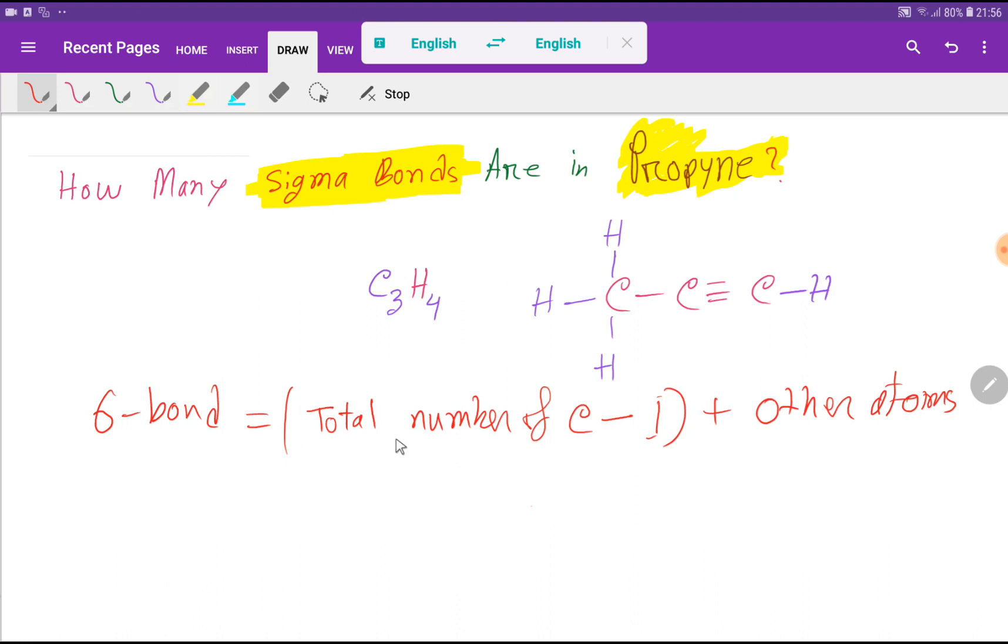Look at here: total number of carbon minus 1 plus other atoms. So for this molecular formula we have total number of carbon is 3 minus 1, plus other atoms. Here other atoms is 4, so basically we have 3 minus 1 plus 4, that is 2 plus 4 equals 6. So we have 6 sigma bonds in propane.